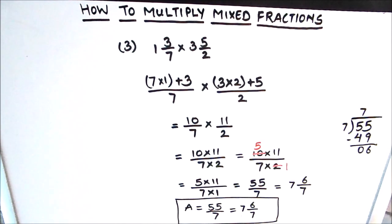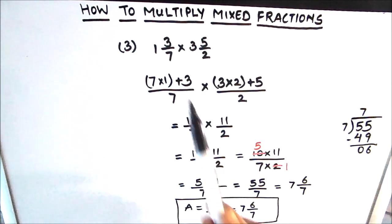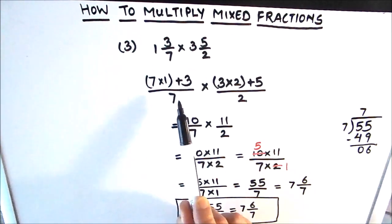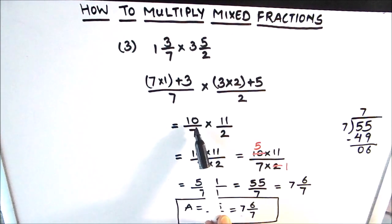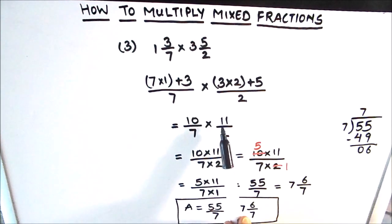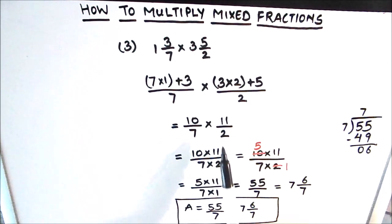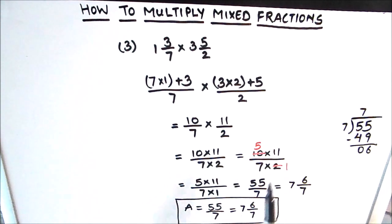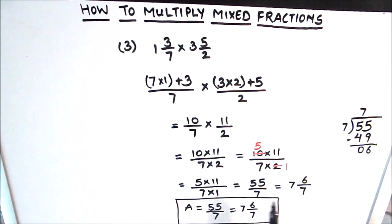Let's take a recap of the method for multiplying mixed fractions. First, convert the mixed fraction into an improper fraction. Then multiply the numerators together and the denominators together. Before writing the final answer, check whether there is a common factor between the numerator and denominator. If there is, simplify the fraction first, then write the product as the final answer.